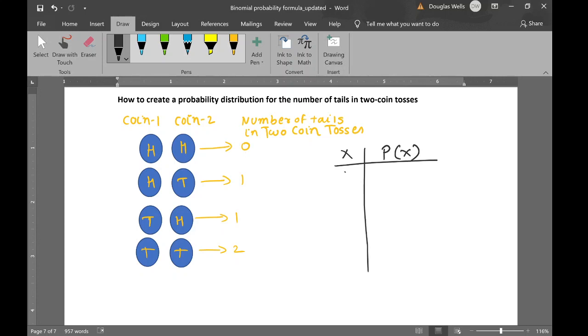We have zero tails, we have one tail, we have two tails. How many times zero tails shows up? It shows up one out of four times, so the probability is 0.25.